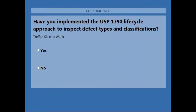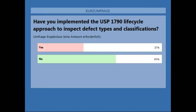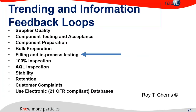Poll: have you ever implemented the USP 1790 life cycle approach to inspect defect types and classifications — yes or no? The USP life cycle is pretty new to a lot of you — 63% said no, whereas 37% said yes. I'd like to give one more example: a filling and in-process testing case where we can now apply what we've learned about the life cycle. The second example is supplier quality testing when we look into stoppers.